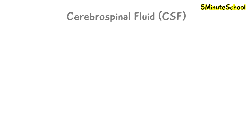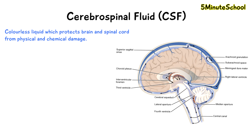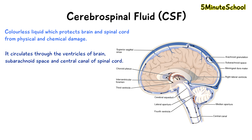Cerebrospinal fluid, also abbreviated as CSF, is a colorless liquid which has a purpose to protect the brain and spinal cord from physical and chemical damage. It circulates through the ventricles of the brain, the subarachnoid space, and the central canal of the spinal cord.